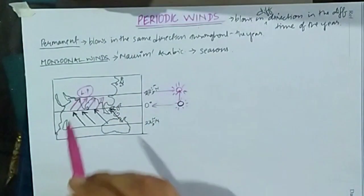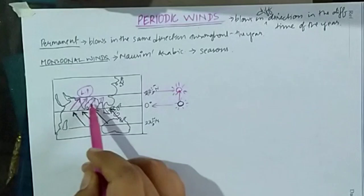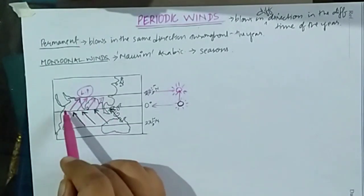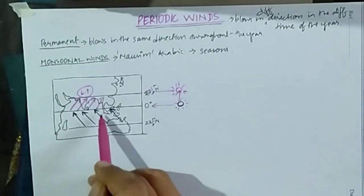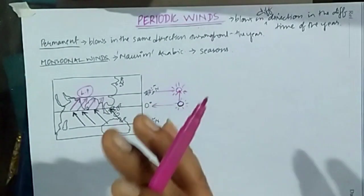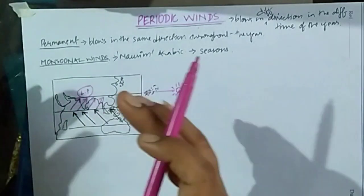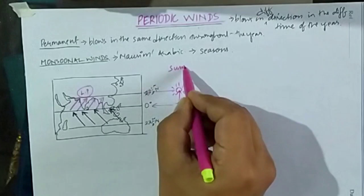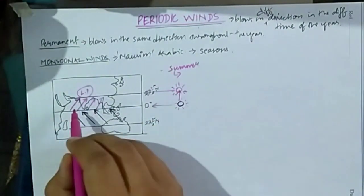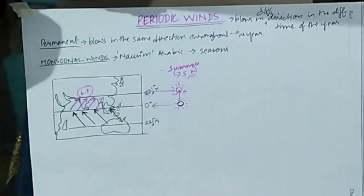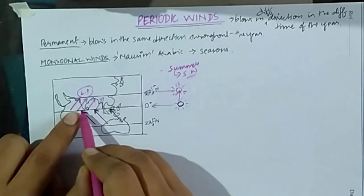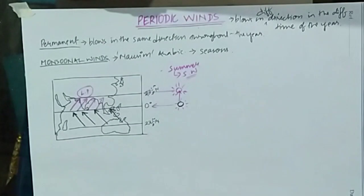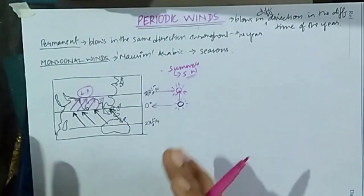During the summer season in the northern hemisphere, winds are entering the Indian subcontinent. These winds blow entirely over water bodies through the Indian Ocean, so they carry lots of moisture. When these moisture-laden winds enter India, they shower a huge amount of rainfall. The direction of the wind entering India is from the southwest, entering from the southwestern side over Kerala.